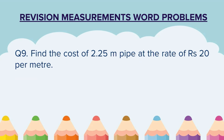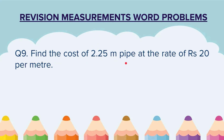Question 9. Find the cost of 2.25 m of pipe at the rate of Rs. 20 per meter. Now students, I will tell you a secret — a question like this is a teacher's favorite, because in minimum usage of words, everything is being communicated. Let us decode this question: rate of Rs. 20 per meter means the cost of 1 meter is Rs. 20, and we have to find the cost of 2.25 meters.